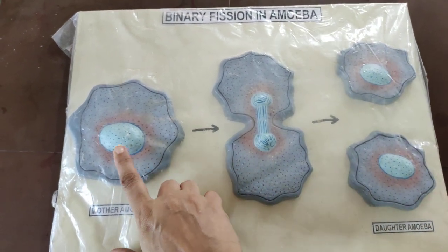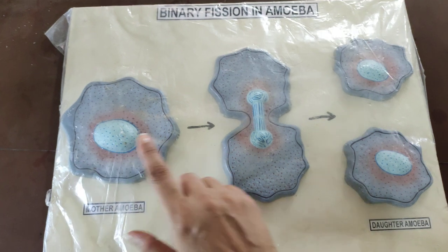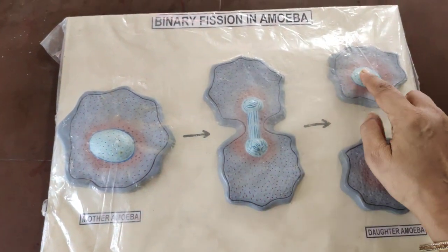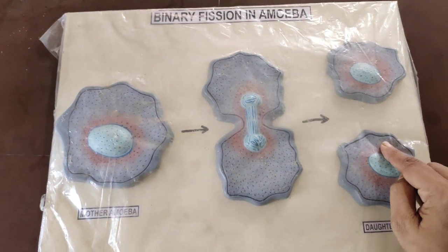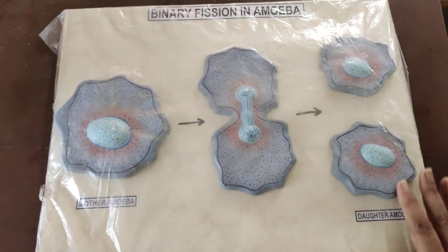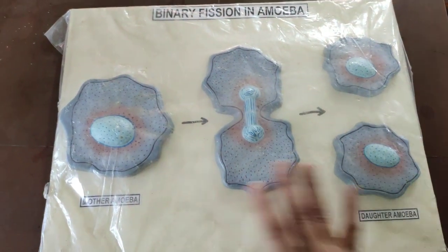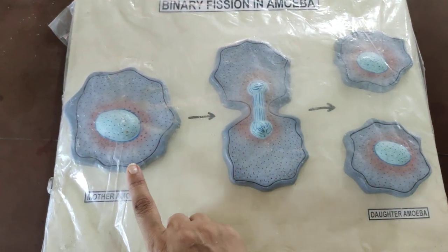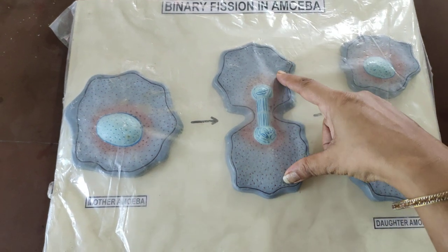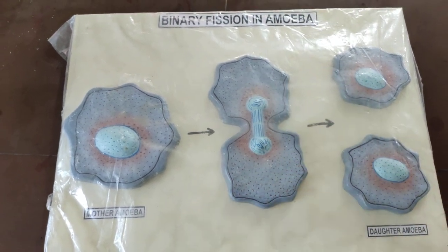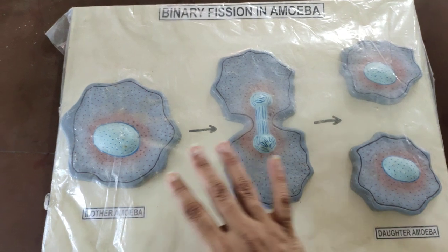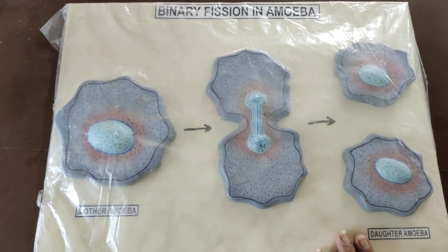So this one is amoeba having a nucleus, now the nucleus is going to divide into two halves. So the mother body and this is a daughter amoeba. So this type of reproduction in which the mother body divides into two daughter cells is known as binary fission. And it is an asexual reproduction.